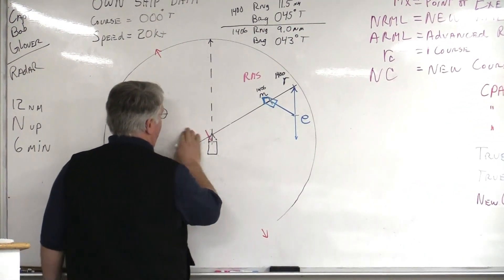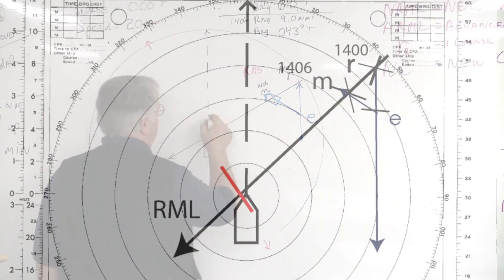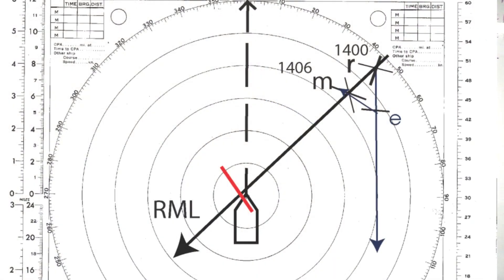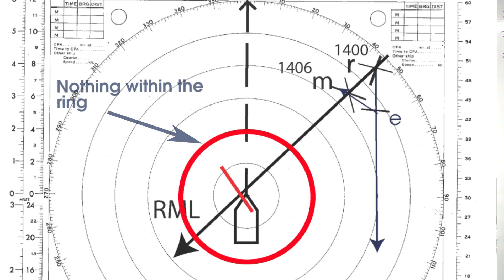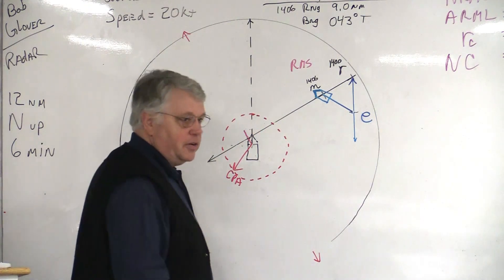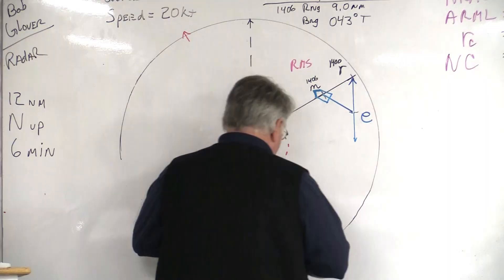So, what happens is that the captain may say, okay, I don't want any vessels to come within a two-mile CPA radius of our ship. So, here's our badly drawn two-mile circle here around us. So, we have that established.